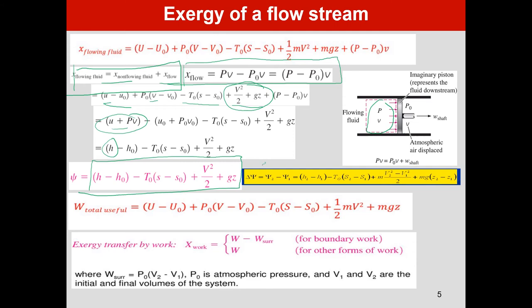To find out the exergy change between states 1 and 2, that will be equal to ψ₂ − ψ₁, which equals (H₂ − H₁) − T₀(S₂ − S₁) + m(V₂² − V₁²)/2 + mg(Z₂ − Z₁). This is useful for the exergy of a system at different states. For exergy by work, it is given by W − P₀ΔV for boundary work. For other forms of work such as kinetic or potential energy, it is equal to W itself.